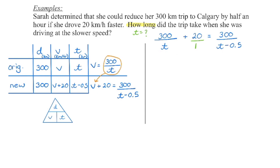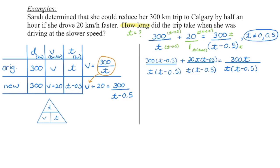Now we're back to solving. We begin by bracketing any binomials and checking if they can factor — in this case, they can't. We state our non-permissible values and then find the lowest common denominator. The binomial needs to be part of the LCD, and the T monomial also has to be part of it. We look at what we multiplied the original denominator by to get the LCD, multiply the numerator by the same amount to keep it equivalent, and once the denominators are balanced, we can drop them and distribute.